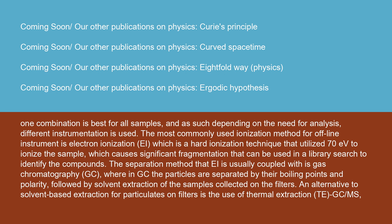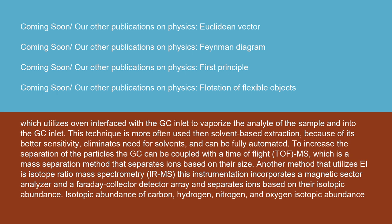The most commonly used ionization method for offline instruments is electron ionization (EI), which is a hard ionization technique that utilizes 70 eV to ionize the sample, causing significant fragmentation that can be used in a library search to identify the compounds. The separation method that EI is usually coupled with is gas chromatography (GC), where particles are separated by their boiling points and polarity, followed by solvent extraction of the samples collected on the filters. An alternative to solvent-based extraction is thermal extraction (T-GC-MS), which utilizes an oven interfaced with the GC inlet to vaporize the analyte into the GC inlet. This technique is more often used because of its better sensitivity, it eliminates the need for solvents, and can be fully automated.